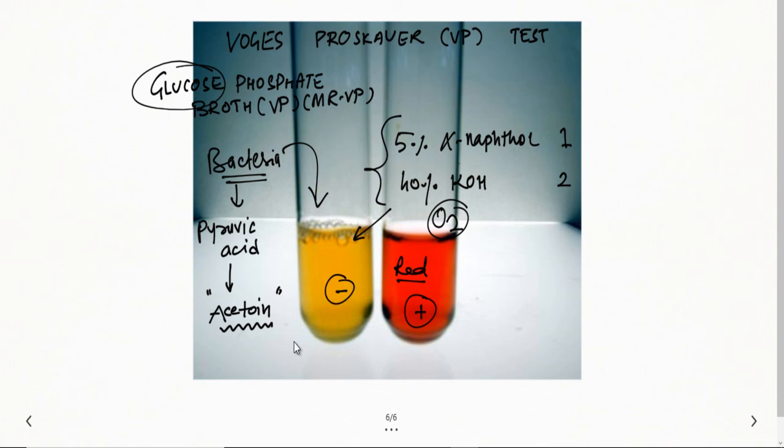For example, E. coli will give a negative Voges-Proskauer test, while Klebsiella will give a positive Voges-Proskauer test.